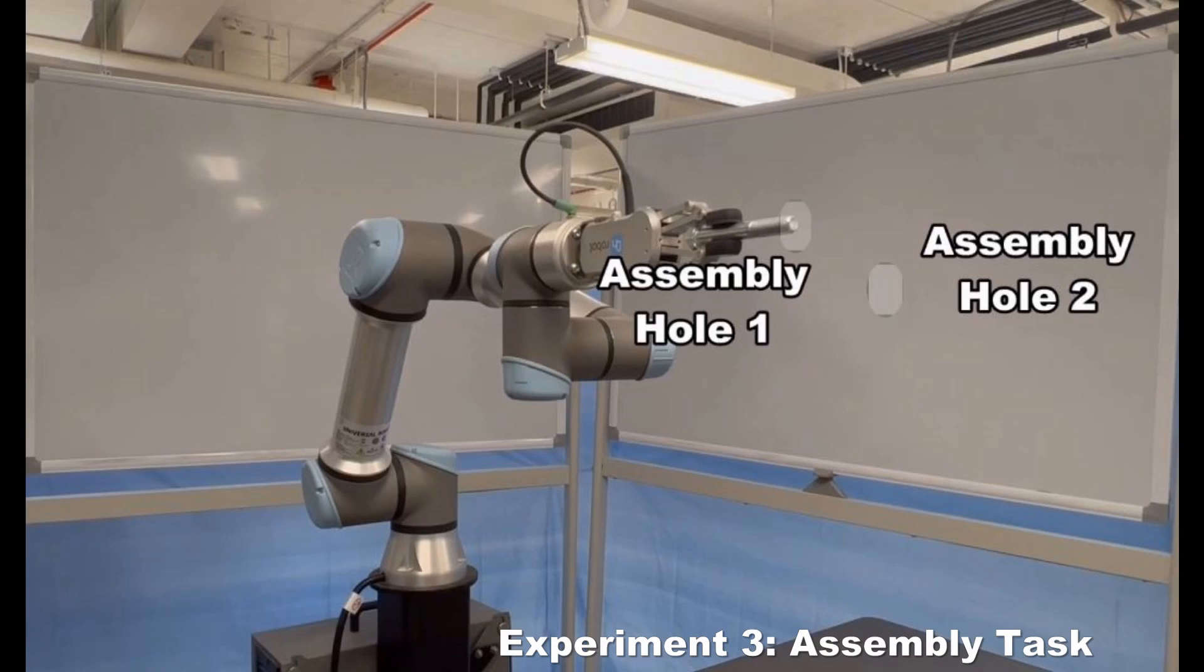In the third experiment, the end effector is required to disassemble a screw from assembly hole one and then twist the screw into assembly hole two. Our RL-based motion planner cannot generate a motion plan because no feature saved in the library is semantically similar to transferring a screw from assembly hole one to assembly hole two.